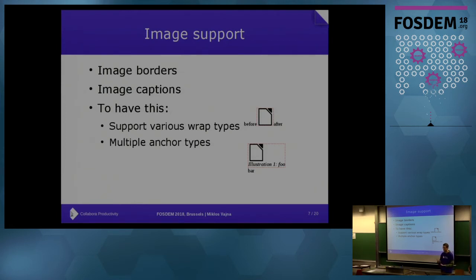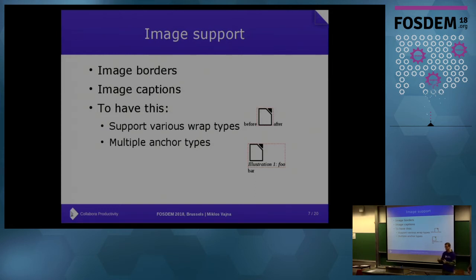In 6.1 you can have much better image support: various image borders, image wrap types, and image anchor types are all supported, or at least a considerable number of combinations. From a user's point of view, a caption on an image is just one more property of the image, and this is something that e-books use a lot. Technically that is a text frame containing an image plus additional text that contains text fields — all of these building blocks are implemented, so at the end you will see working caption support for images.